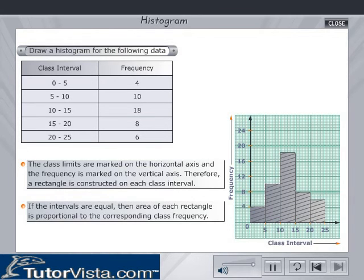If the intervals are equal, then the area of each rectangle is proportional to the corresponding class frequency. If the intervals are unequal, then the area of each rectangle is also proportional to the corresponding class frequency.